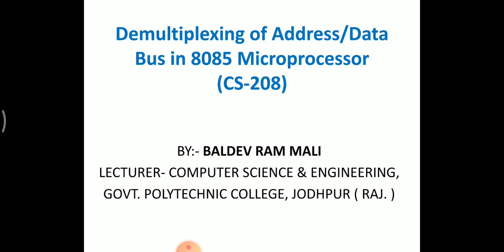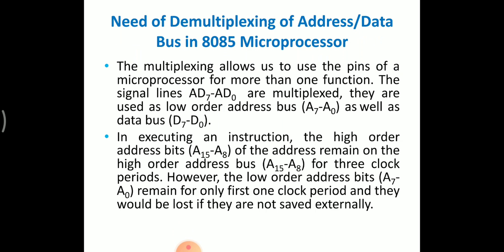Subject Code CS 208. सबसे पहले हम यह discuss करेंगे demultiplexing of address data bus की क्या need है, क्या आवश्यकता है। In the 8085 microprocessor, why do we demultiplex the address data bus? Multiplexing is a technique that allows us to use the pins of a microprocessor for more than one function.